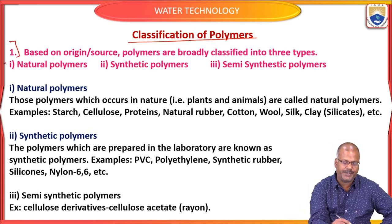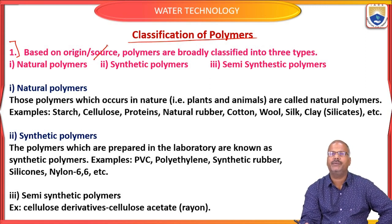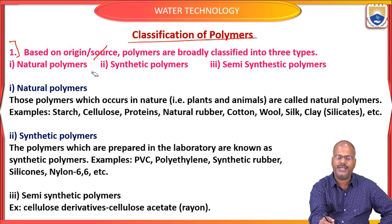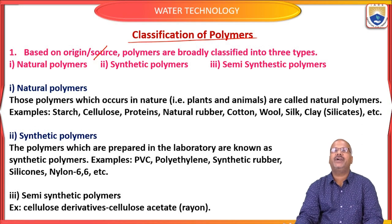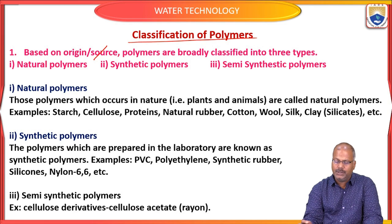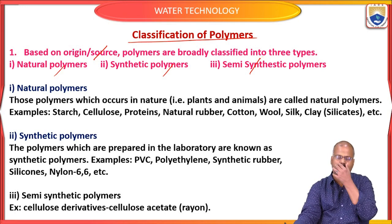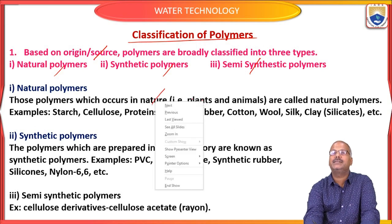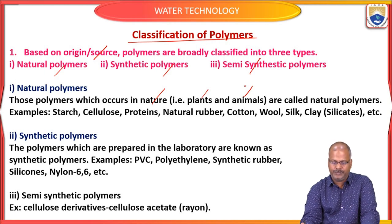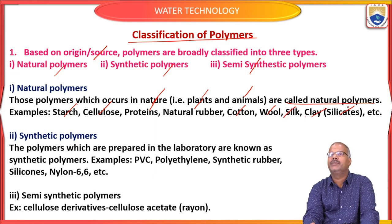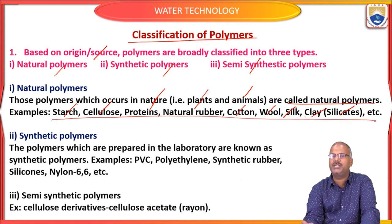The first type of classification is based on origin or source. Polymers are broadly classified into: natural polymers, synthetic polymers, and semi-synthetic polymers. Natural polymers are those which occur in nature — from plants or animals — such as starch, cellulose, proteins, natural rubber, cotton, wool, silk, clay, and silicates.